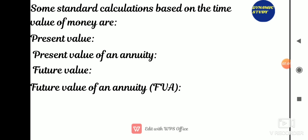Present value of perpetuity is an infinity and constant stream of identical cash flows. Future value is the value of an asset or cash at a specified date in the future based on the value of that asset in the present. Future value of annuity (FVA) is the future value of a stream of annuity payments, assuming the payments are invested at a given rate of interest. The solution may be found using formulas, a financial calculator, or spreadsheet. The functions used are PV, FV, rate, NPer, and PMT.